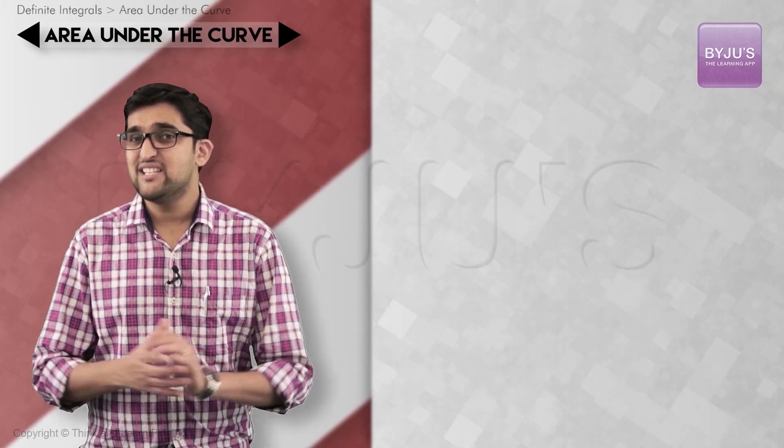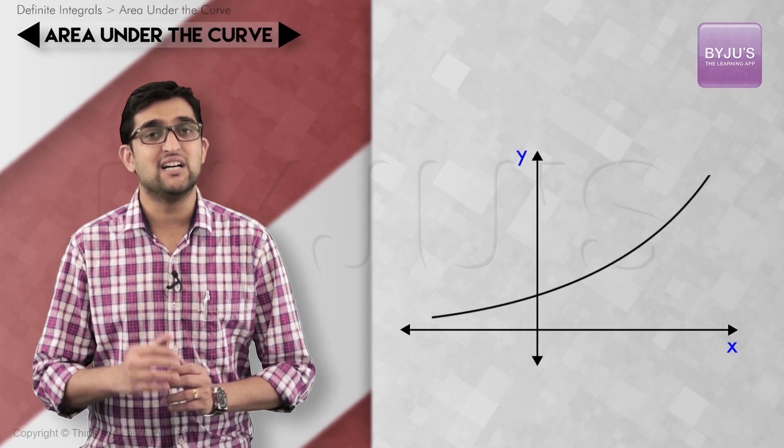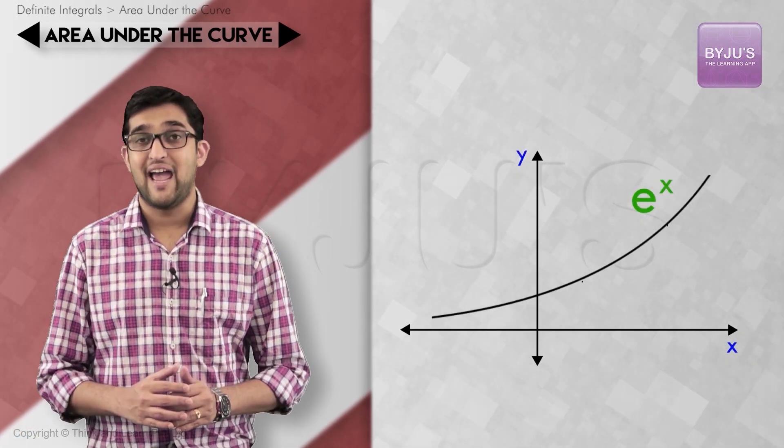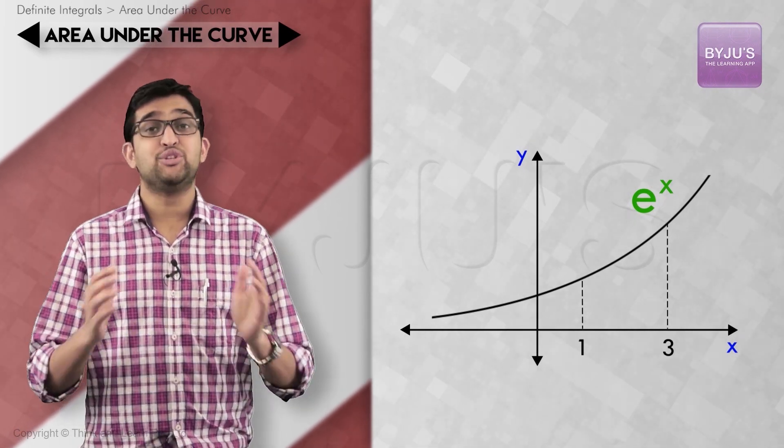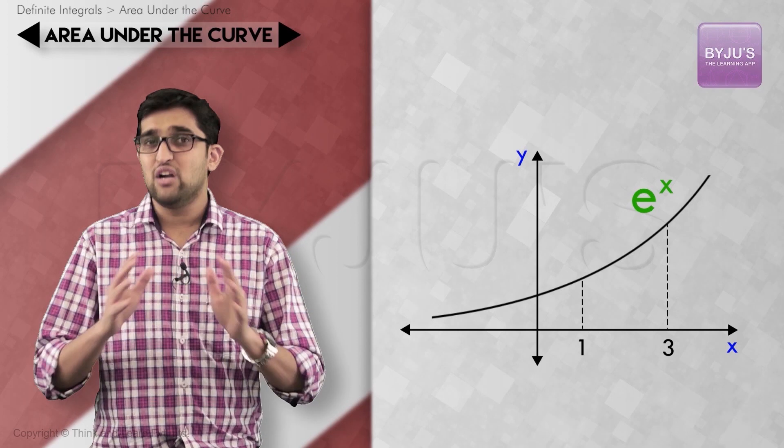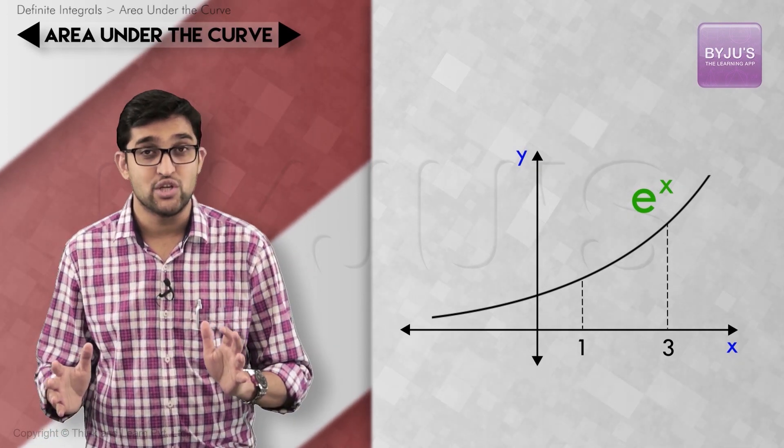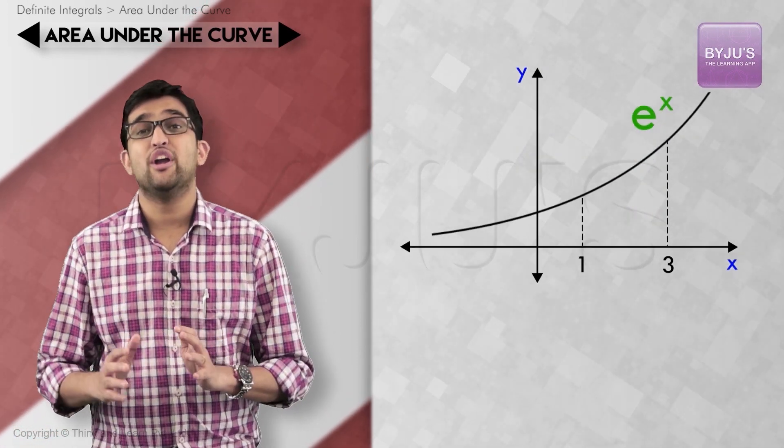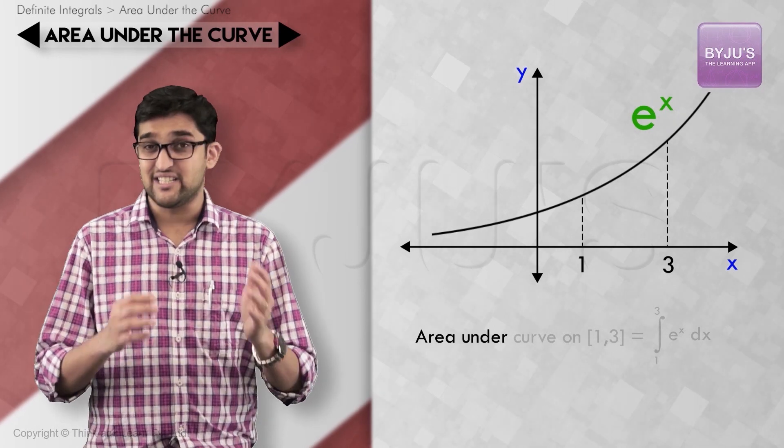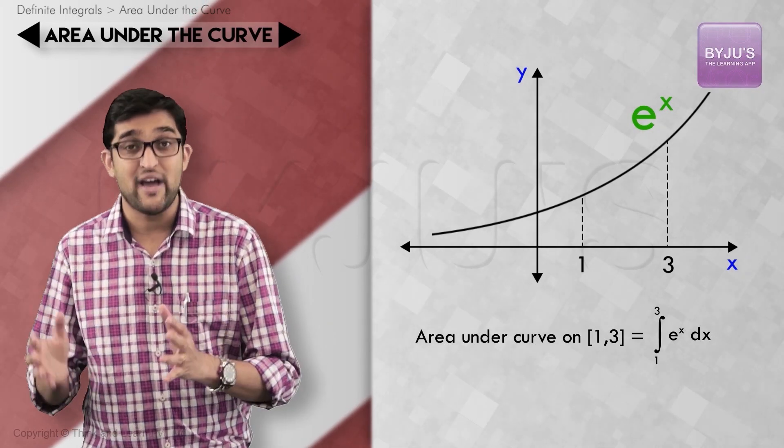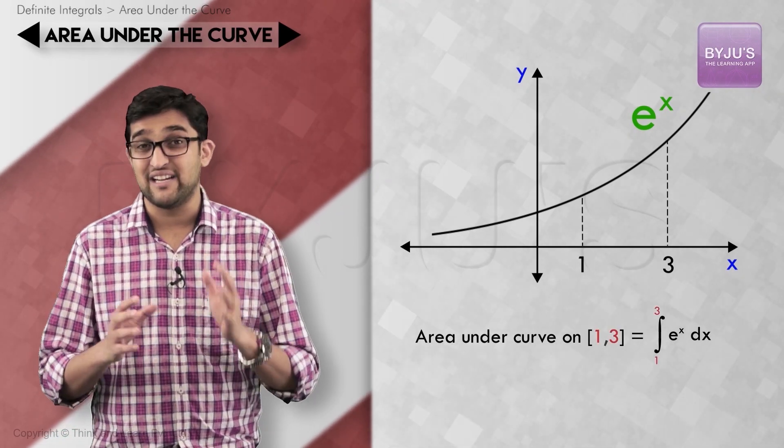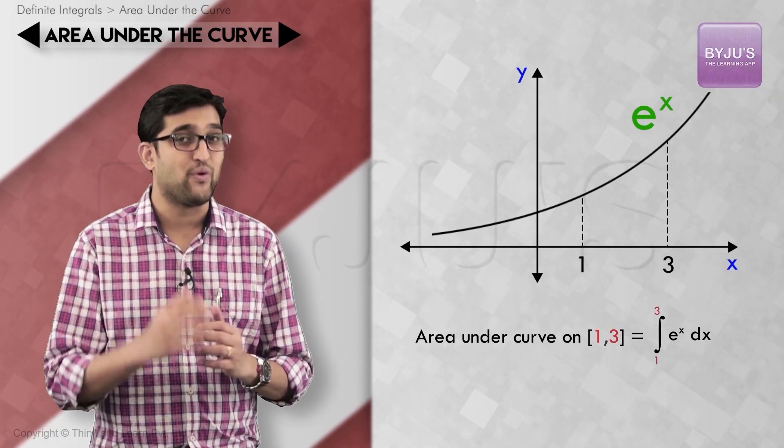For example, consider area bounded by the curve y equals e raised to x, x-axis and the lines x equals 1 and x equals 3. As you know, this plot is always positively valued, so we don't need to draw the plot to arrive at the graph since the integral a to b f(x) dx will provide us with the area required by applying appropriate limits on the functions in the equation.